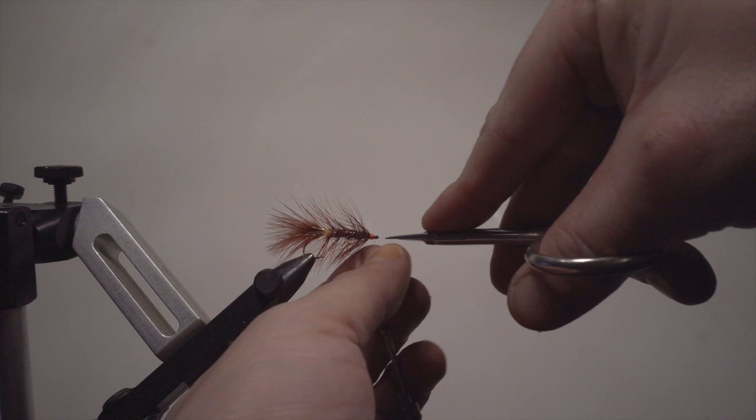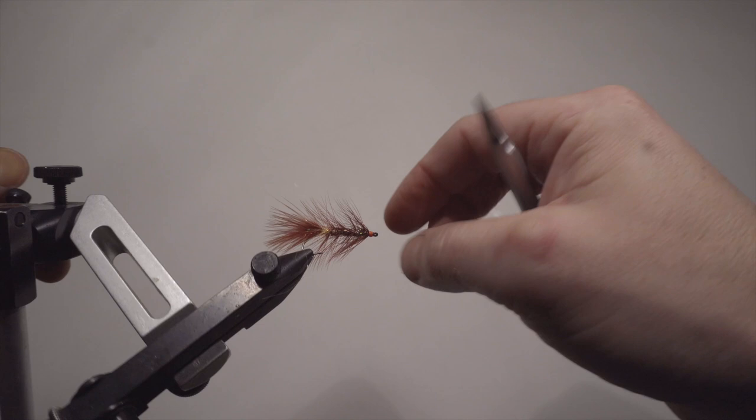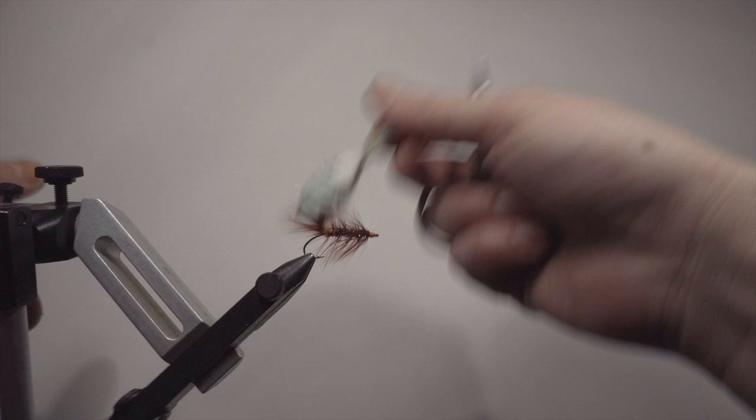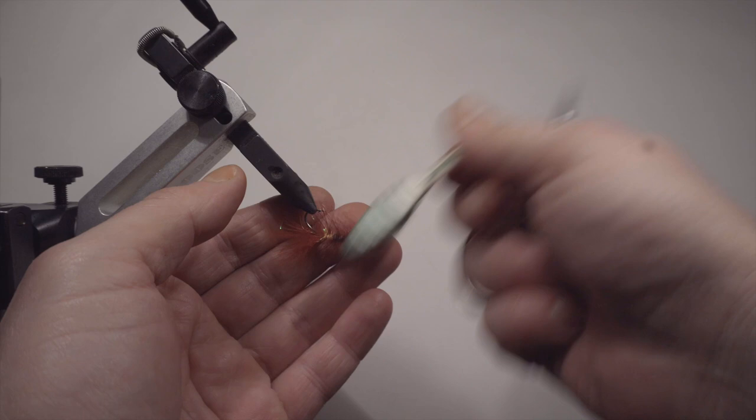As long as this glue is wet, you should try to pinch in that little part that you cut, the excess thread. Then I'm taking my toothbrush, or if you have a cool fly tying brush, you can of course use that. That's what it's for. Then I'm brushing quite hard because I really want a little bit of that dubbing to come out.